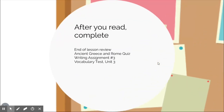For assignments with this lesson: read either the OLS or the summary I provide — the summary is totally fine. Take the Ancient Greece and Rome quiz, and complete the end-of-lesson review in the OLS. Writing assignment number three goes with this unit — it's about whether you think it's ethical or fair for countries to take historical artifacts from other countries. Also complete the vocabulary test for Unit 3, and I'll send out a checklist email.